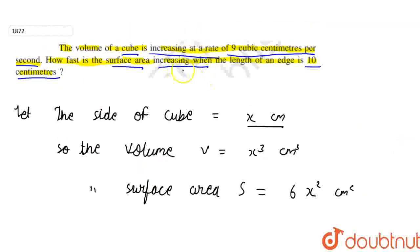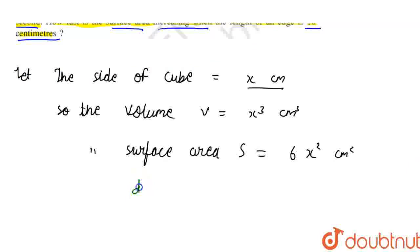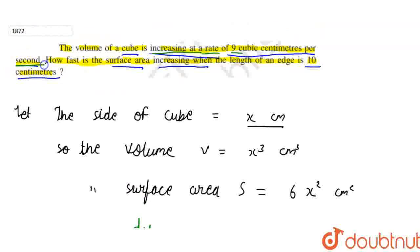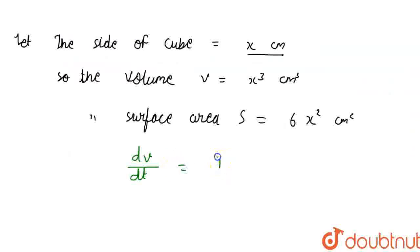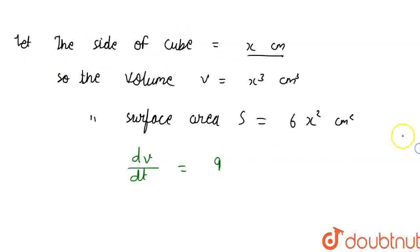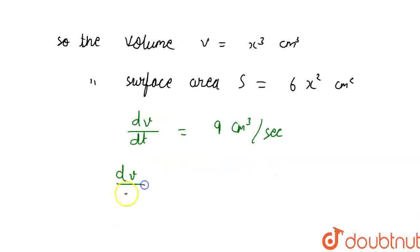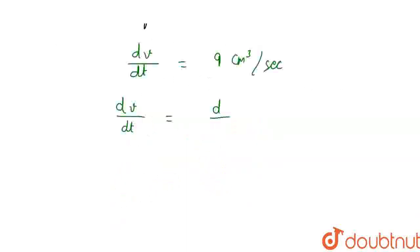Now from the question, the rate of increase in volume is given as 9 cubic centimeters per second. So dV/dt is given — because the change is with respect to time (per second means with respect to time) — so dV/dt = 9 cubic centimeters per second.